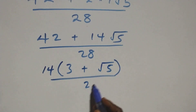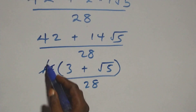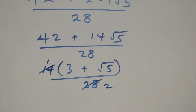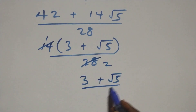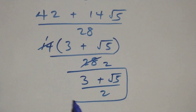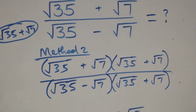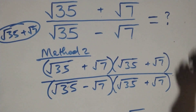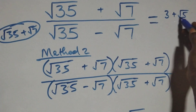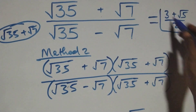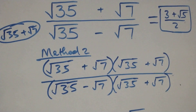We factor out 14 from the numerator: 14 into bracket (3 plus root 5), over 28. The 14 goes into 28 twice, so what we have becomes (3 plus root 5) over 2 — the same result we obtained in Method 1. Therefore we conclude that this given problem simplifies to (3 plus root 5) over 2. Thank you for watching. Don't forget to subscribe for more videos, turn on the notification bell, and share this video. Thumbs up and put your comments below.